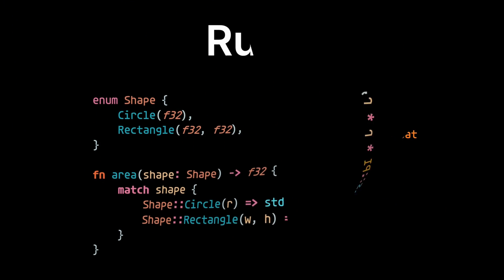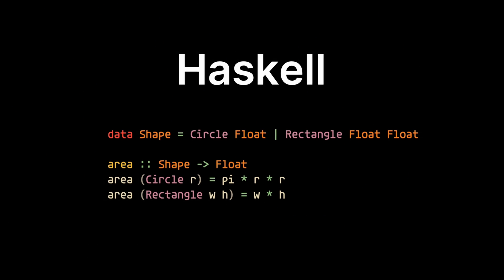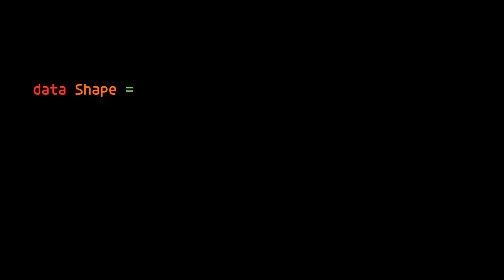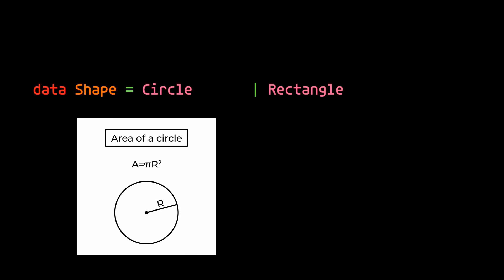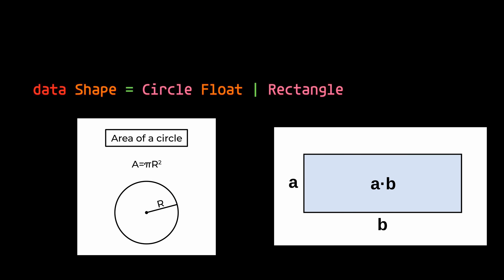In some languages, like Haskell, you can define a data type, like shape for example, with multiple constructors. In this case, a constructor for a circle and a constructor for a rectangle. Now, the parameters that define one shape might be different from the parameters that define another shape. For example, a circle would have one parameter, which is its radius, which in this case would be a float. But a rectangle would have two parameters, those being its width and height, which we'll also define as floats.